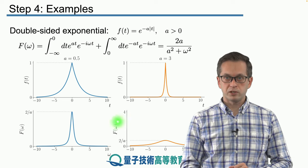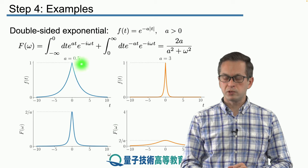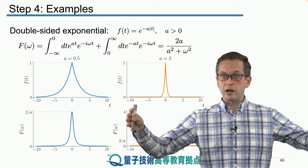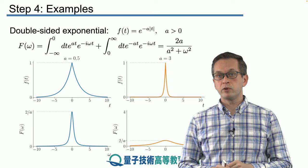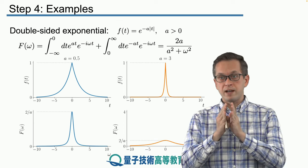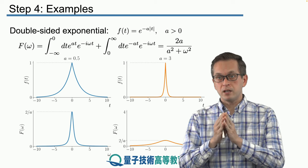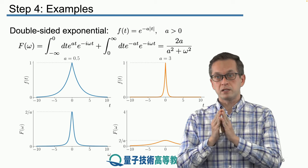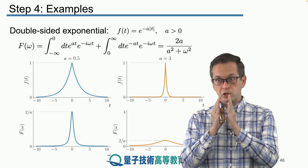If you start with a function, with a time signal or with a distribution that's more broadly spread, so it's spread over a larger time, its Fourier series will be very narrow. On the other hand, if you start with a time series or a time signal that's very, very short in time,